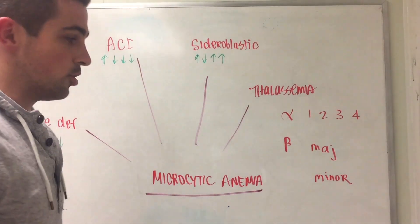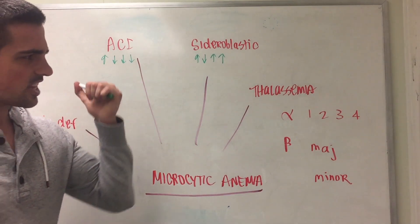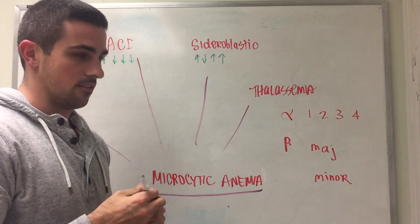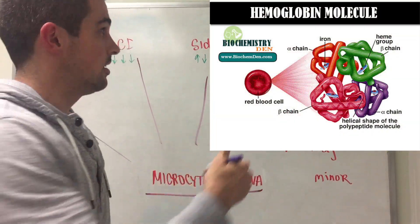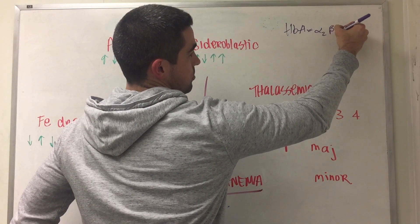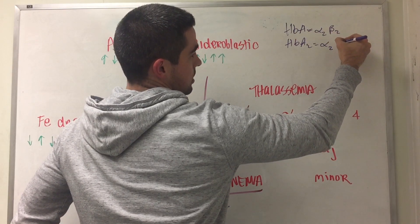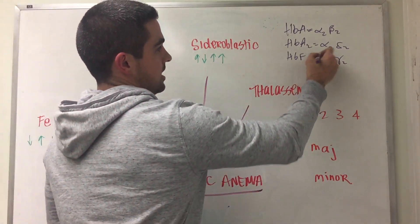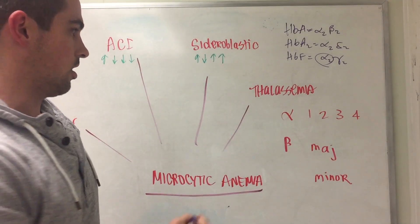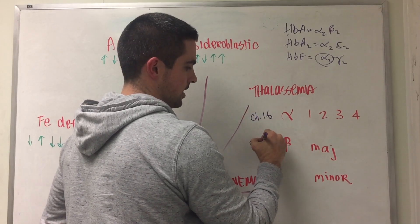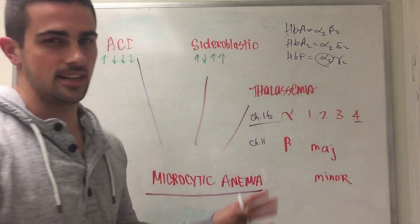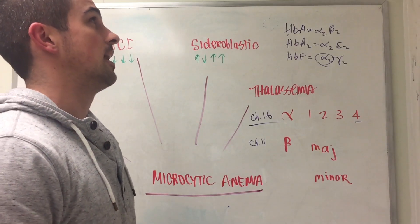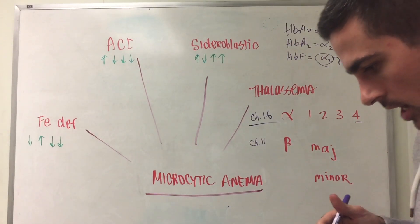Now we have thalassemias. The thalassemias are probably the most testable out of all of these with the exception of iron deficiency. The thalassemias are broken into two main categories: alpha and beta. The alpha and beta refer to the chains. You have regular hemoglobin which is 2 alpha and 2 beta. That's HbA, alpha-2 beta-2. You have HbA2 which is alpha-2 delta-2. You have HbF which is alpha-2 gamma-2. The A is the most common one. You actually have four of these and these four are on chromosome 16. Alpha is 4 on 16. Chromosome 11 is beta.